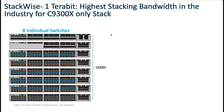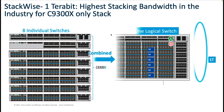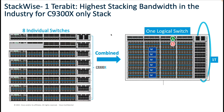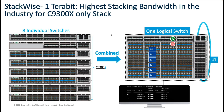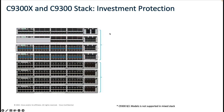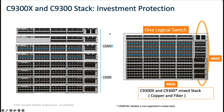On a StackWise design with up to eight members, you can scale up to 288 ports of 90-watt UPoE+ or 384 ports of 60-watt UPoE. For high availability and resiliency, the Catalyst 9300X comes with StackWise one terabit, providing the industry's highest stack bandwidth. You can mix copper and fiber variants to form one logical unit with a unified control and management plane at one terabit stack bandwidth.